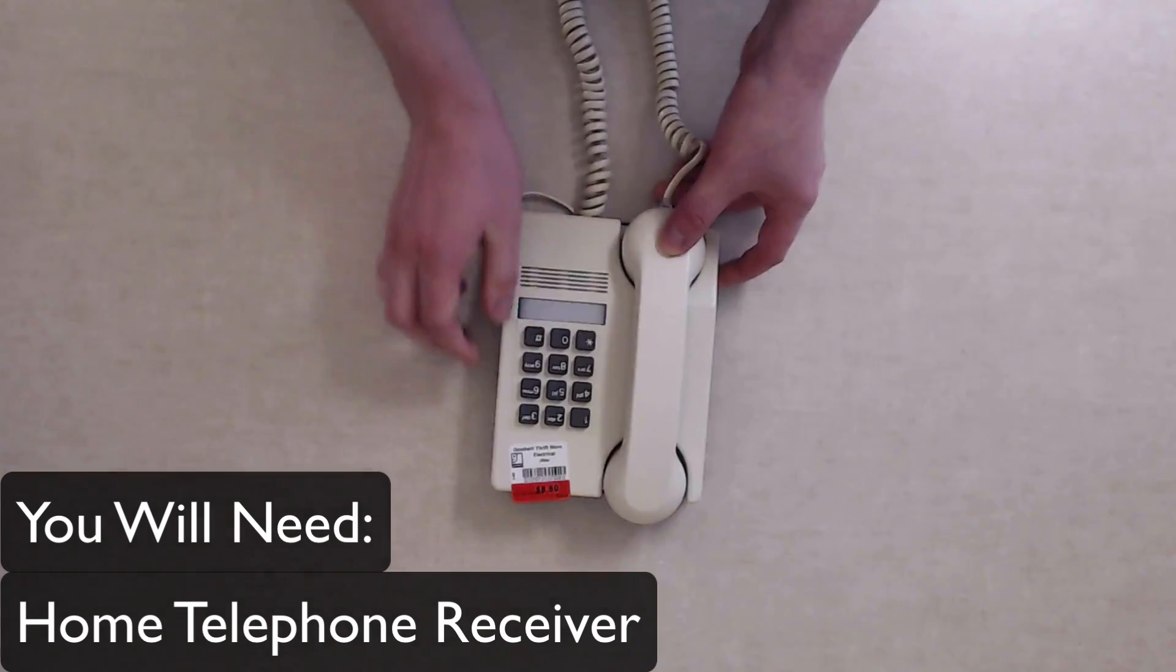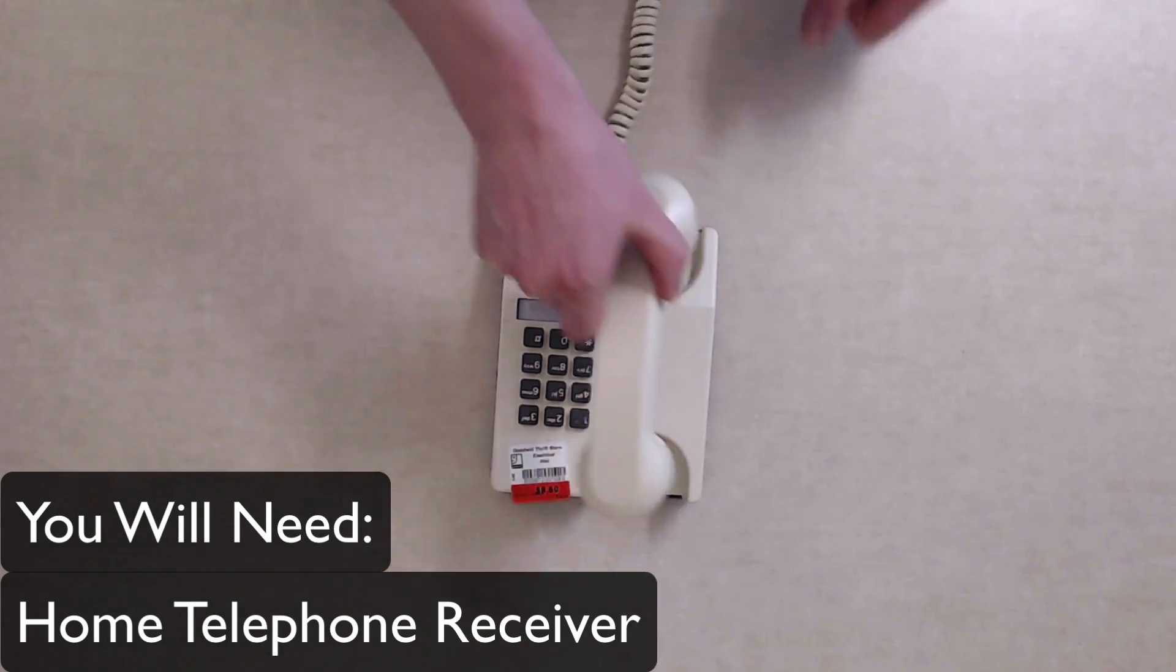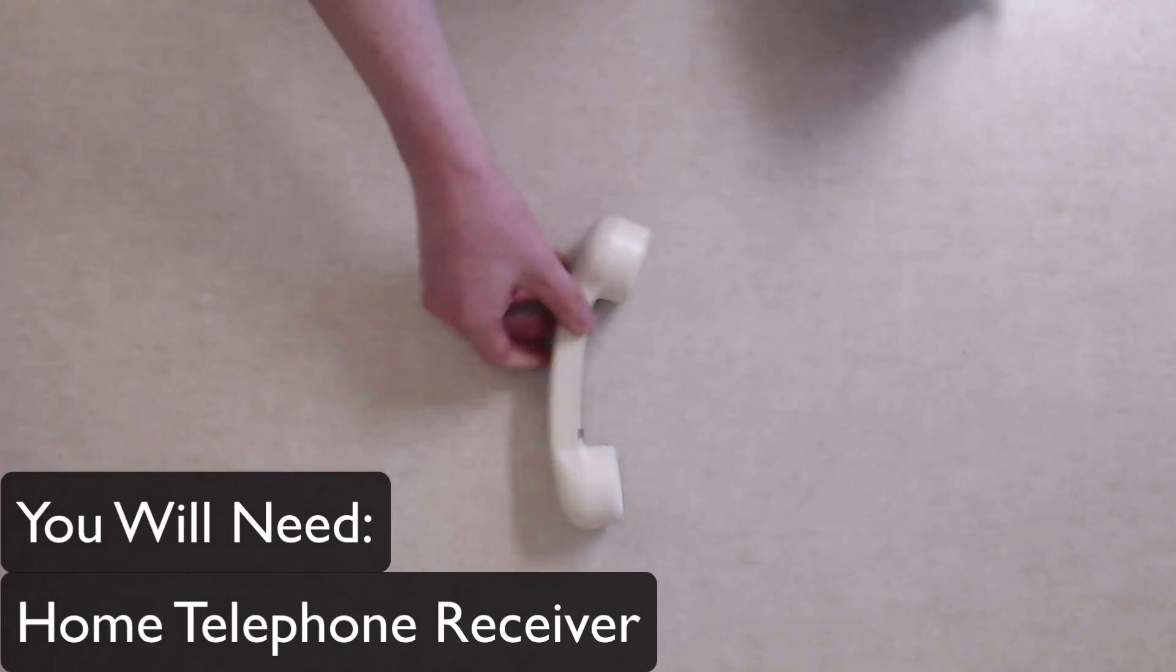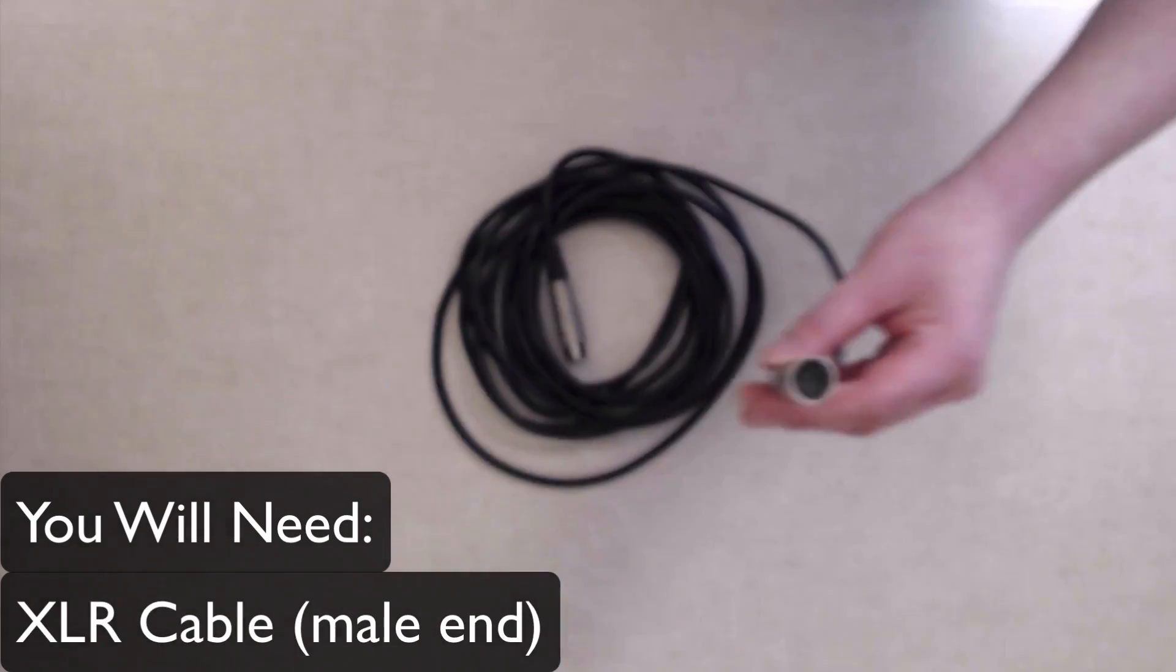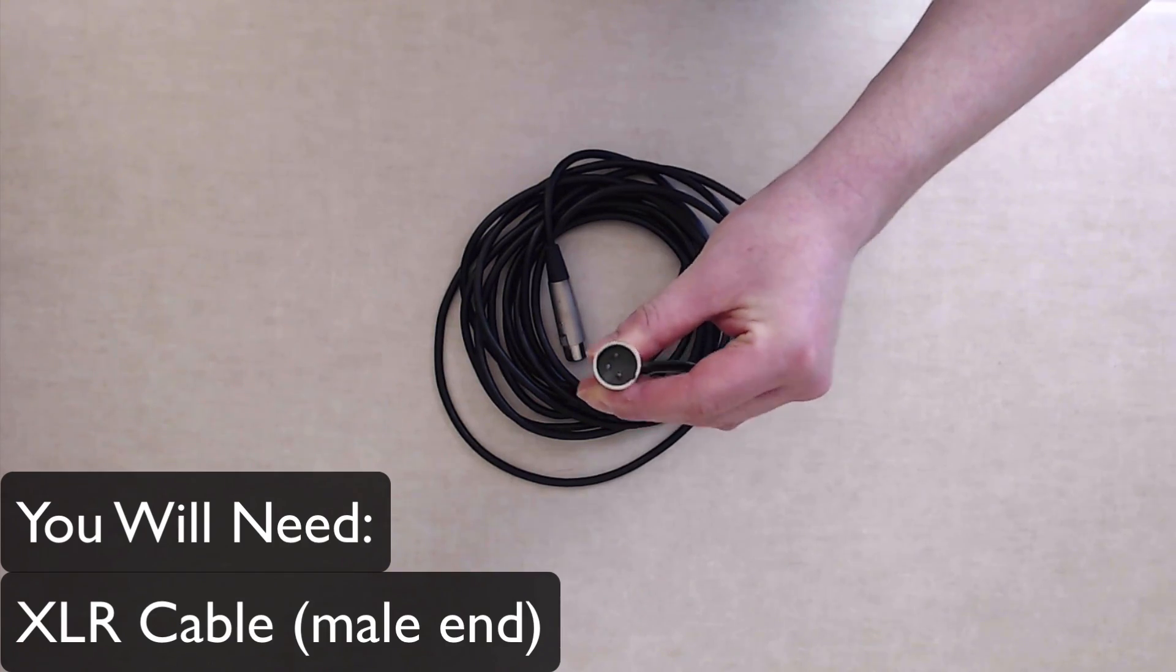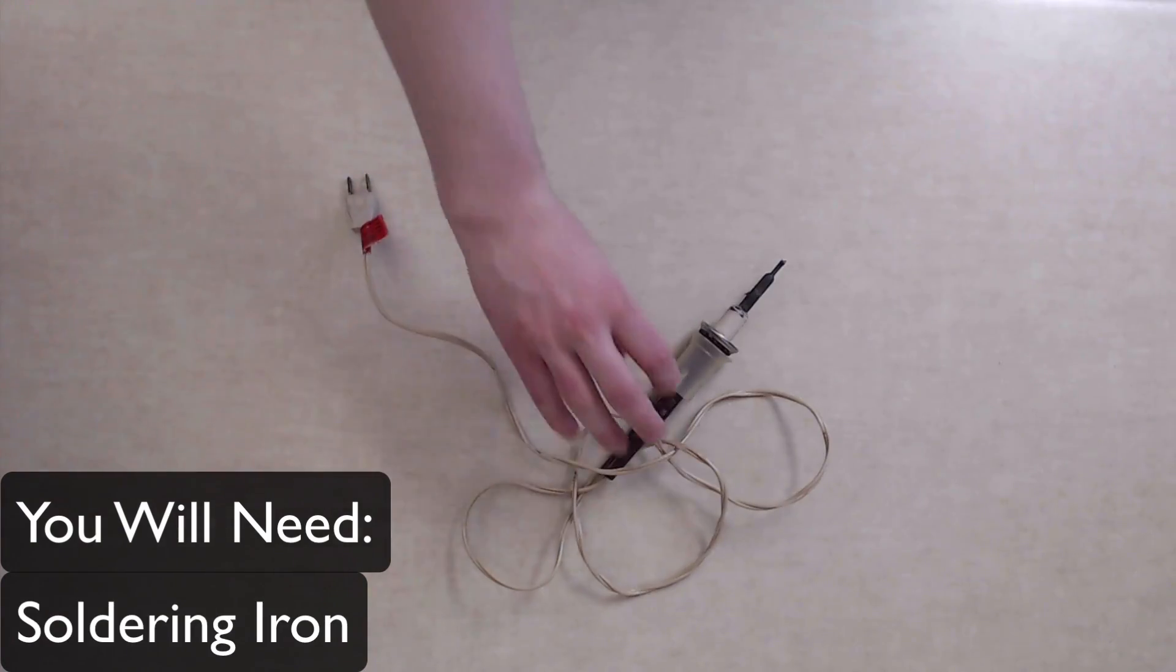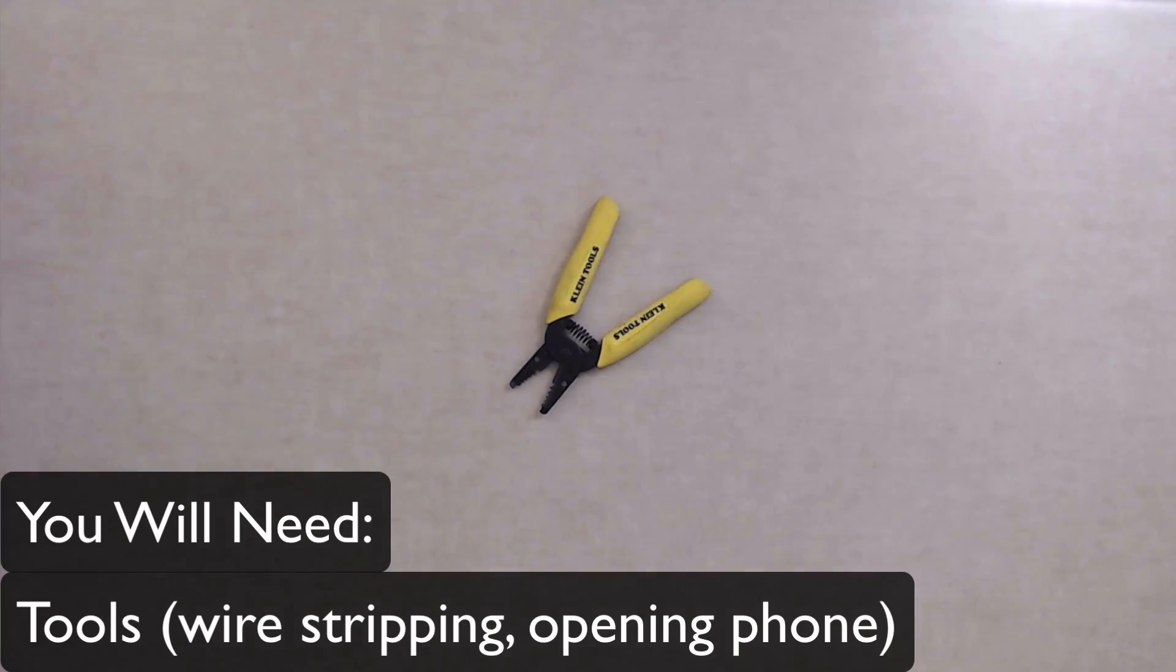So let's get started with this project. To make a telephone microphone, you will need an old home telephone, and we're only going to be using the receiver for this project, an XLR cable to sacrifice. We'll be using the male end of the cable, a soldering iron, and some tools for stripping wires and opening the handset of the phone.